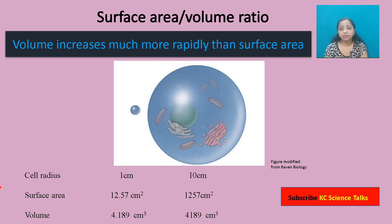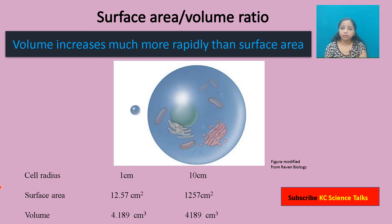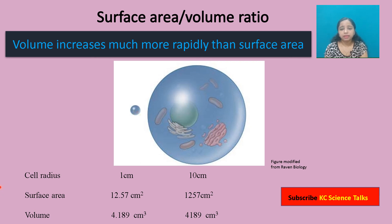For a cell, surface area is more important than volume because a cell has to continuously interact with its environment, and this interaction takes place through the plasma membrane. So the larger the surface area, the larger the span of the plasma membrane, and the more effective will be the interaction between the cell and its environment. Since small cells have a higher surface area to volume ratio than larger ones, cells are usually small.